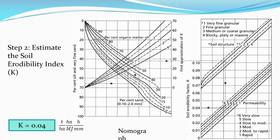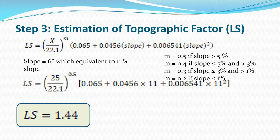The values of these parameters are already available. By joining the lines alternately horizontally and vertically in the nomograph, we obtain K = 0.04 ton·ha·hr/(ha·MJ·mm). Step 3: Estimation of Topographic Factor LS. The slope length is x = 25 meters (spacing of contour bunds). The slope is 6 degrees, which is equivalent to 11 percent.